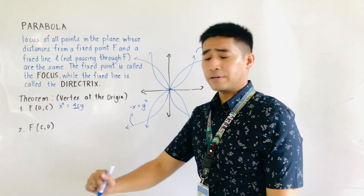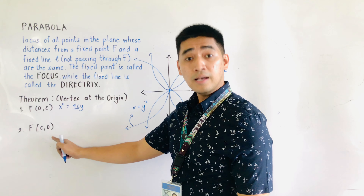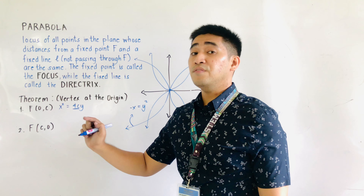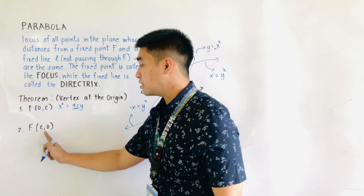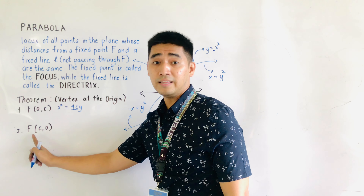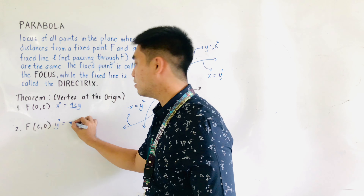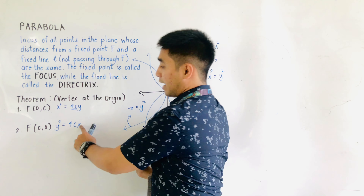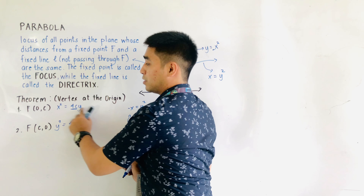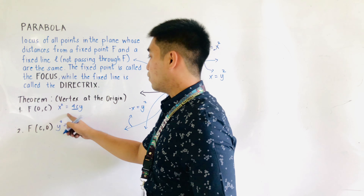For the next theorem, the focus is given as (c, 0). The x coordinate is c and the y coordinate is 0. So what coordinate is being squared now? The one having 0 as the value, and that is y. Therefore, the formula for this one is y squared is equal to 4cx — x, because c is the x value here. Are we clear?